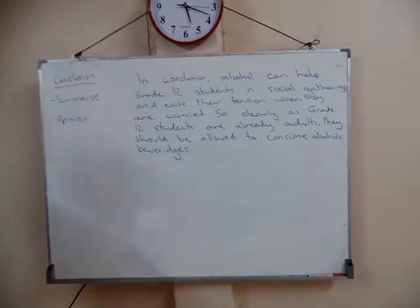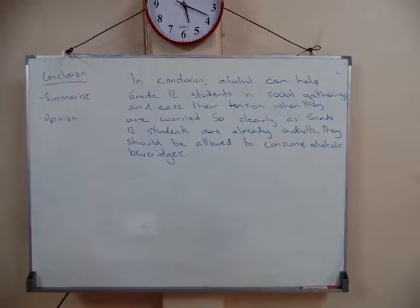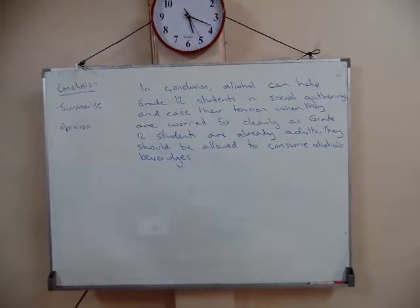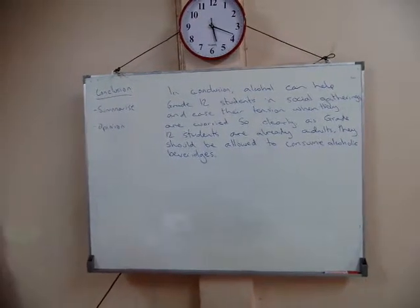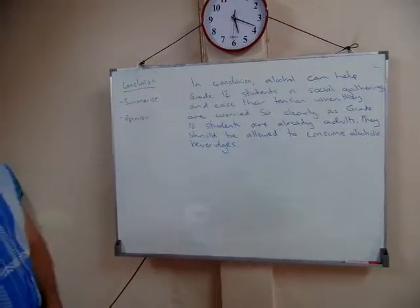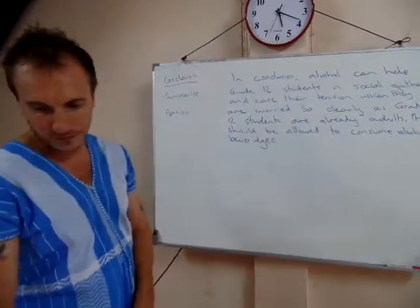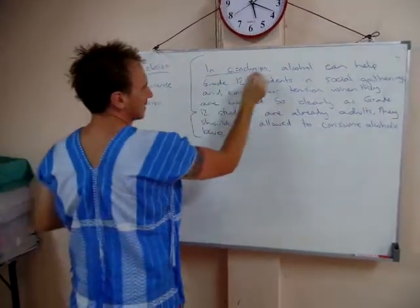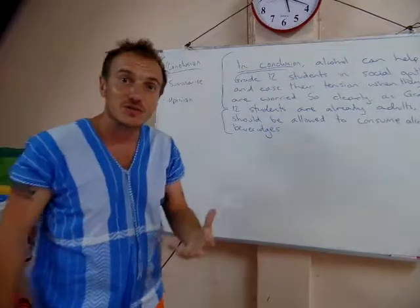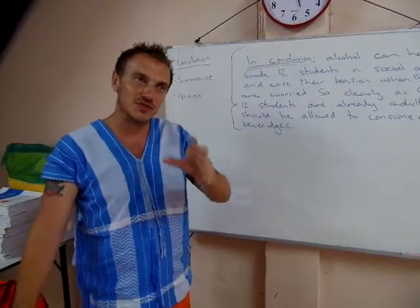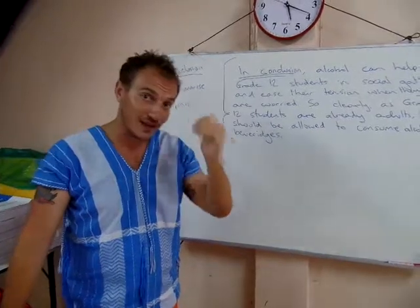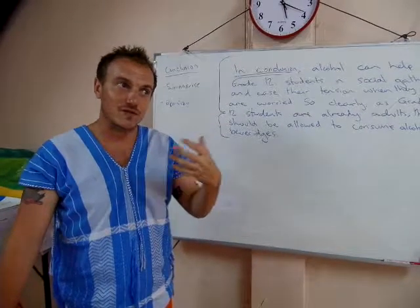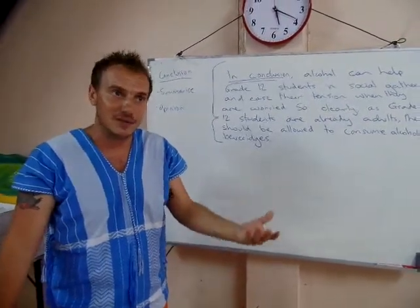Let's have a look. In conclusion, alcohol can help grade 12 students in social gatherings and ease their attention when they are worried. So clearly, as grade 12 students are already adults, they should be allowed to consume alcoholic beverages. We start by saying 'in conclusion' — it's a special transition signal that tells the reader this is the final paragraph, and prepares them to see a summary and the main idea one more time.